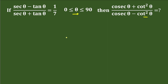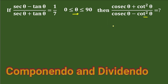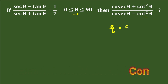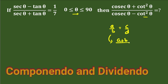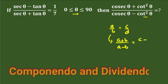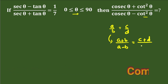Before we start, please give a thumbs up to the video. Now, seeing that the expression is in the form of minus over plus, we can use componendo and dividendo. If we have a divided by b equal to c divided by d, then according to componendo and dividendo we can write a plus b divided by a minus b equals c plus d divided by c minus d.